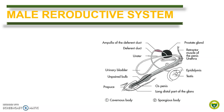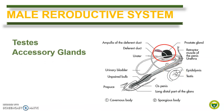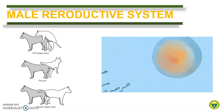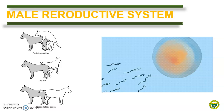The male reproductive system is generally composed of the testis and its gonadal duct system, the male accessory glands, and the penis. The function of the system is the same among animals — to produce viable spermatozoa that can fertilize an ovum from the female counterpart for the perpetuation of life.